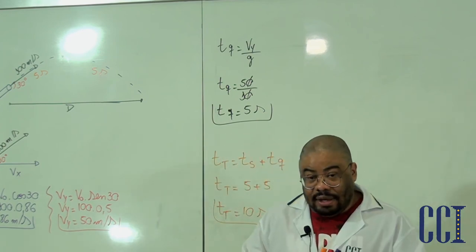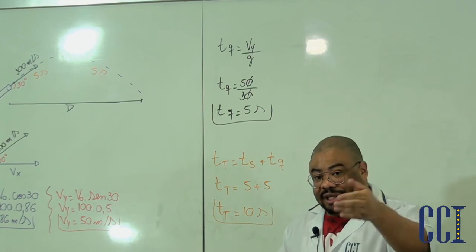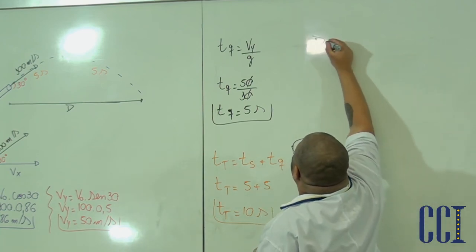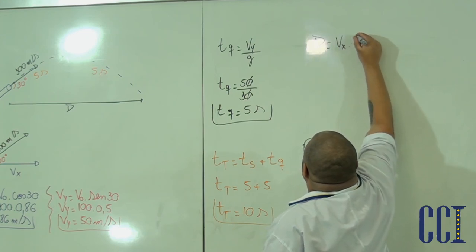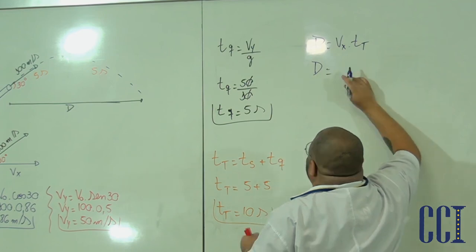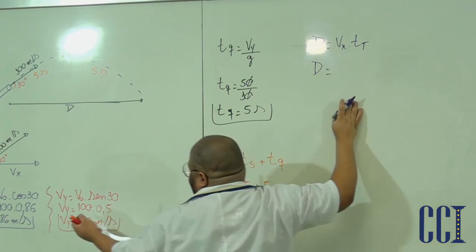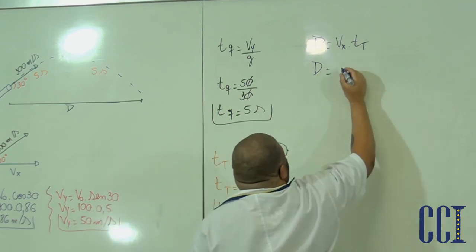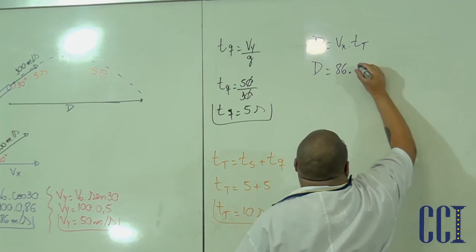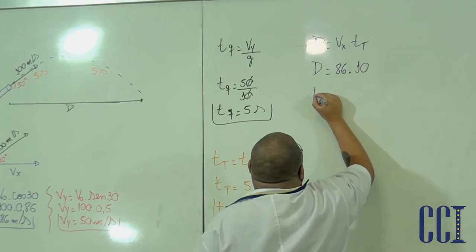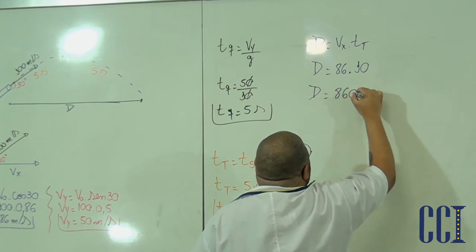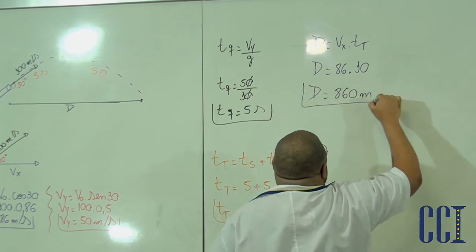Por que estou fazendo o tempo total? Porque quero descobrir o alcance e na equação do alcance eu tenho que utilizar o tempo total. Então, para finalizar: D = Vx · t_total = 86 × 10 = 860 metros. Essa é a distância percorrida.